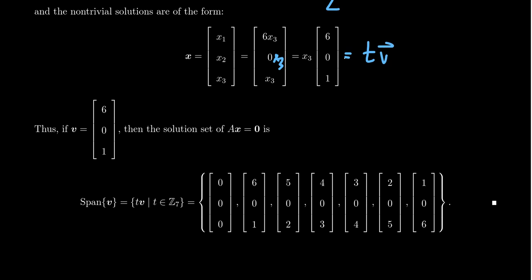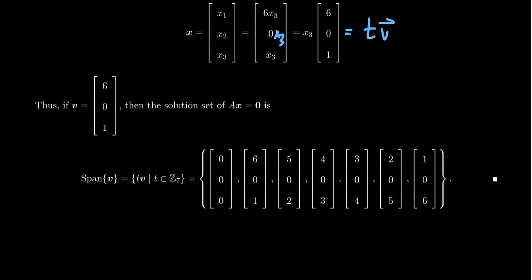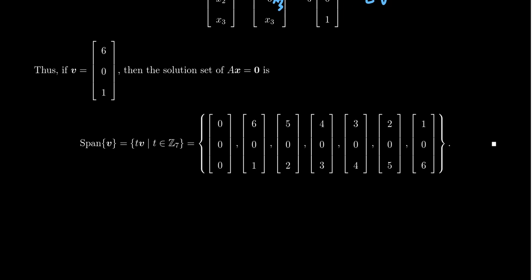We really are just taking scalar multiples of this vector v. In fact, the solution to this homogeneous system is a line that passes through the origin, a line whose slope is determined by this directional slope vector v. So in fact, the solution set to the system is just going to be the span of the vector v, which will have the form t times v for any t in Z7. As there's only seven scalars when you're working mod 7, we can actually list every single solution. There's going to be multiple solutions, but in particular, there's going to be seven solutions.